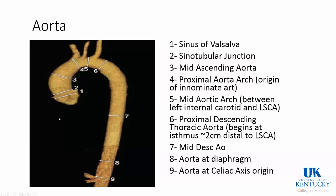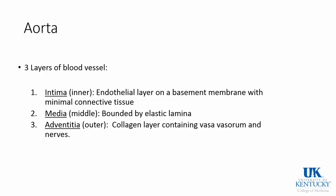When we talk about the aorta we discuss different parts of it. First is the ascending part — right after the aortic valve is the sinus of Valsalva, then the sinotubular junction, then the mid ascending aorta, which turns into an arch and then into the descending aorta. Blood vessels also have three different layers: an intimal inner layer, a media middle layer, and an outer adventitia layer, each with different components.